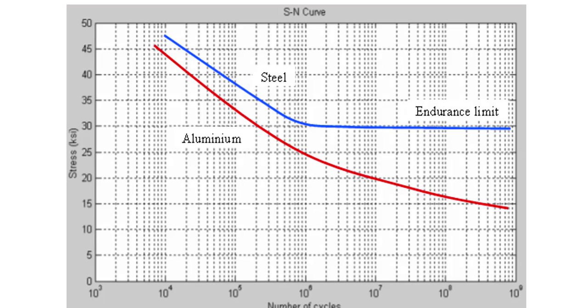For example, here is a curve for steel and aluminum. The blue line is the fracture line of the steel and the red line is the fracture line of the aluminum.